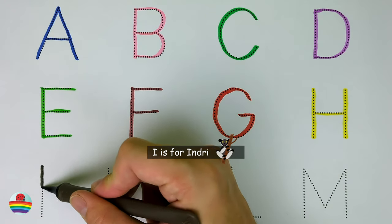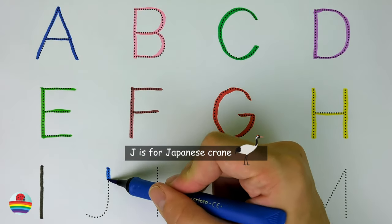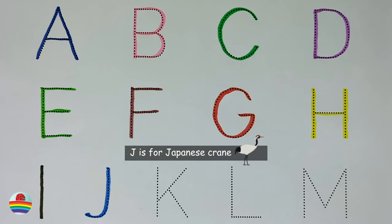I. I is for injury. J. J is for Japanese crane.